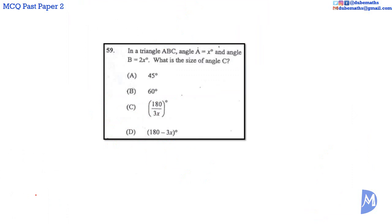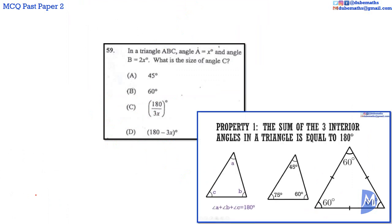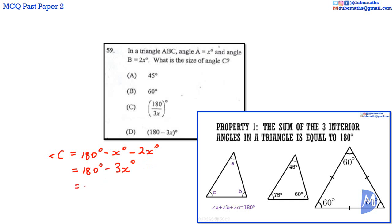Question 59. The sum of the interior angles in a triangle is 180 degrees. We are given that in triangle ABC, angle A = X degrees and angle B = 2X degrees. Therefore, angle C = 180° − X° − 2X° = 180° − 3X°. The answer is D.